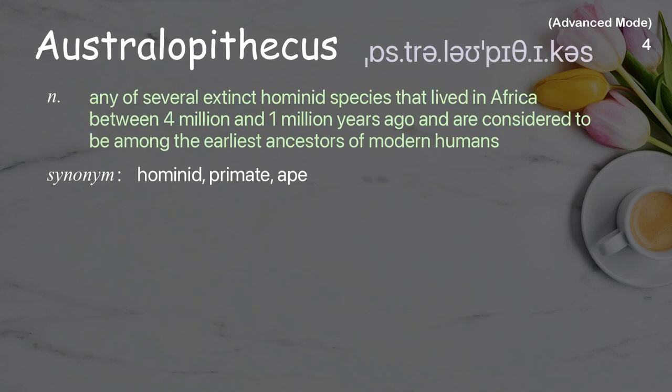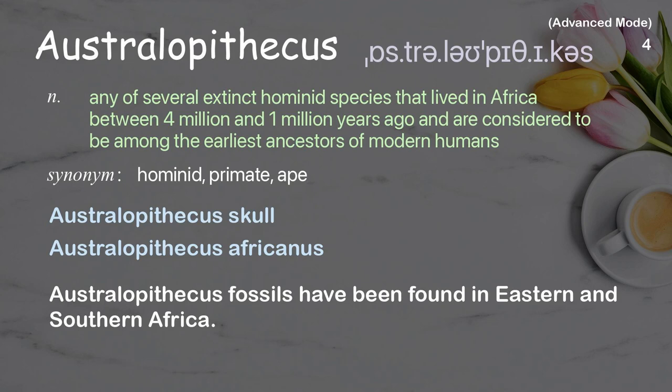Australopithecus: any of several extinct hominid species that lived in Africa between 4 million and 1 million years ago and are considered to be among the earliest ancestors of modern humans. Examples: Australopithecus skull; Australopithecus africanus. Example sentence: Australopithecus fossils have been found in eastern and southern Africa.